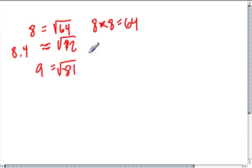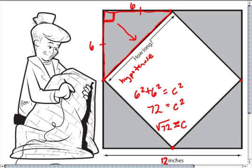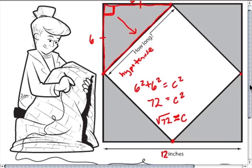And if we use a calculator to figure out the exact square root of 72, let's see how close my guess was. The square root of 72 is, in fact, 8.4852. So it's very, very close to 8.5.